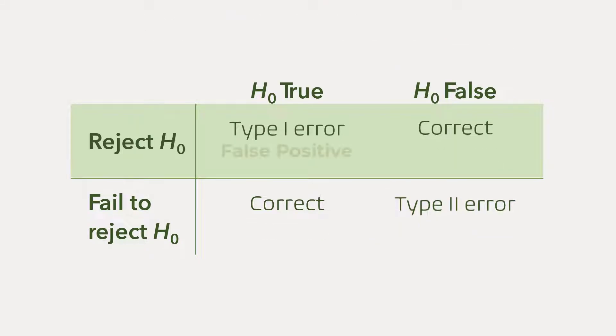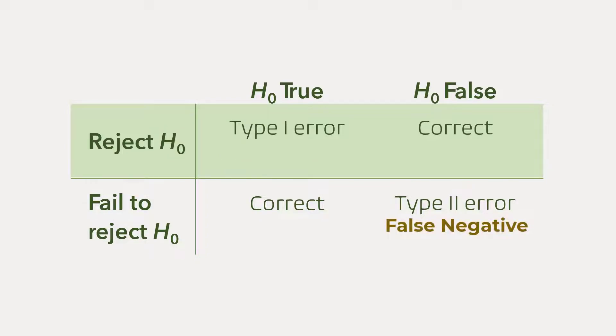Type 1 error is also known as false positive because we are saying that a result is significant when it is not, or we are concluding that there is an effect or a difference when there is not. On the other hand, type 2 error is also known as false negative because we are concluding that there is no significance, no effect, or no difference when actually there is a difference.